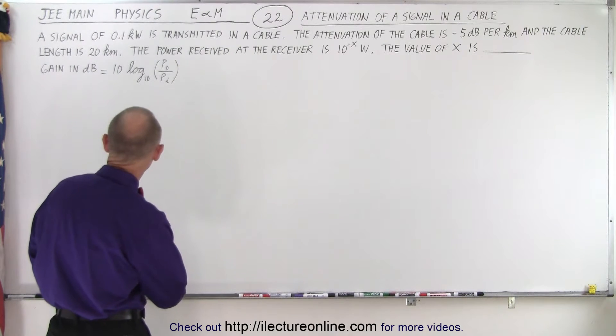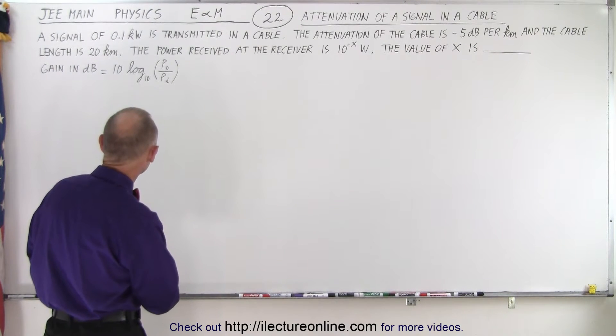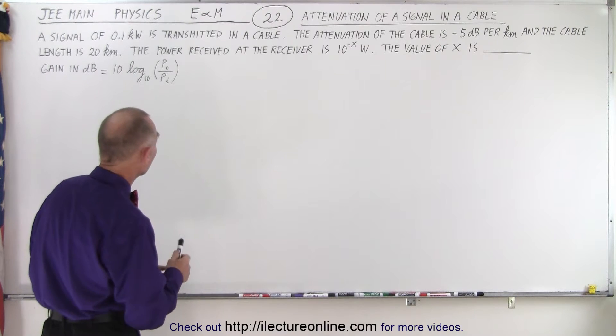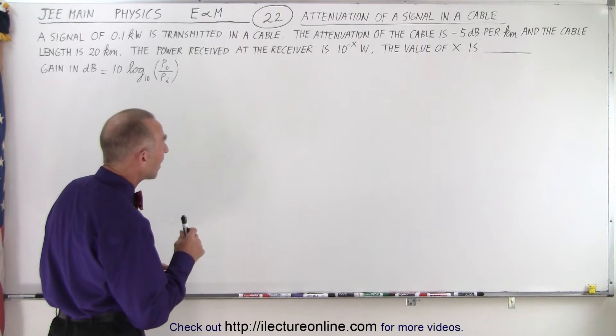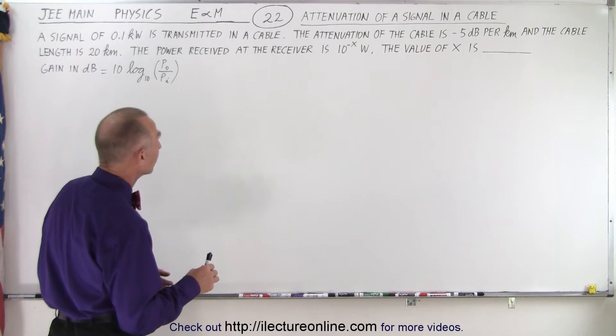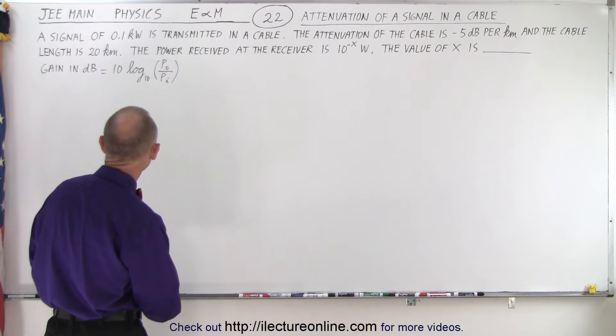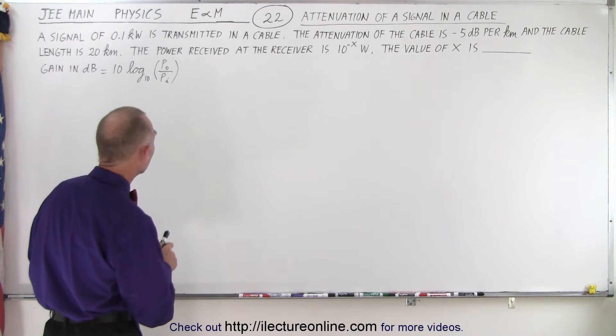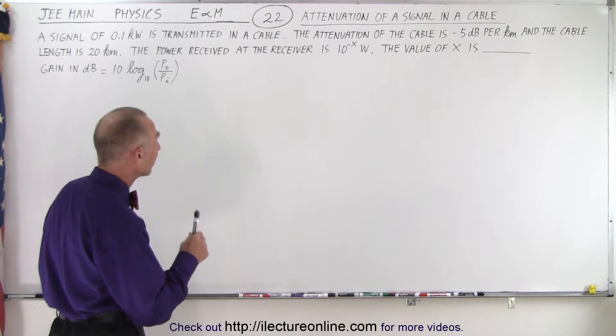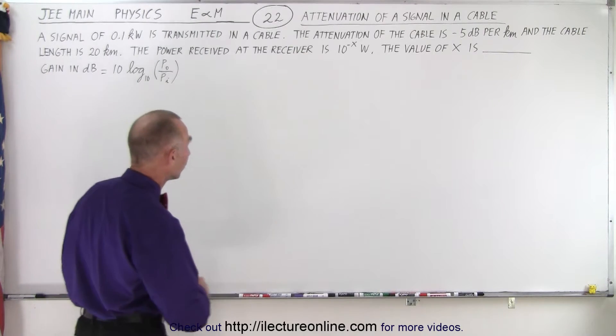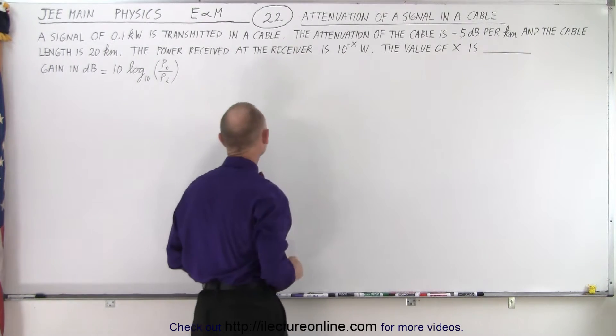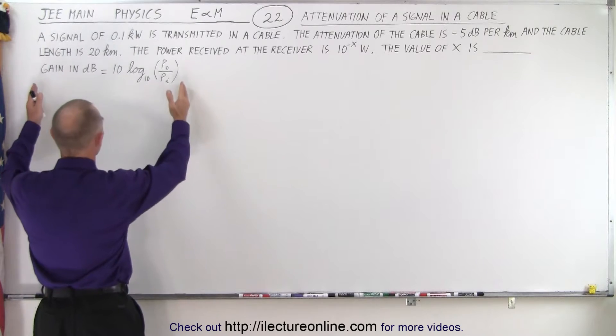Let's read it together. A signal of 0.1 kilowatts is transmitted in a cable. The attenuation of the cable is -5 dB per kilometer and the cable length is 20 kilometers. The power received at the receiver is 10^(-x) watts. The value of x is - so we're looking for the exponent right here.